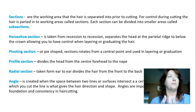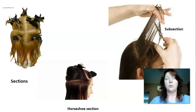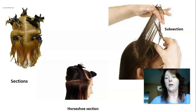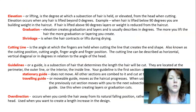An angle is created when the space between two lines or surfaces intersects at a certain point. The angle at which you cut the line gives the hair its direction — whether you're cutting at a 45-degree or 90-degree angle, all these things come into play. In high school I never thought I'd need geometry again, but everything in this class when it comes to haircutting comes down to an angle.